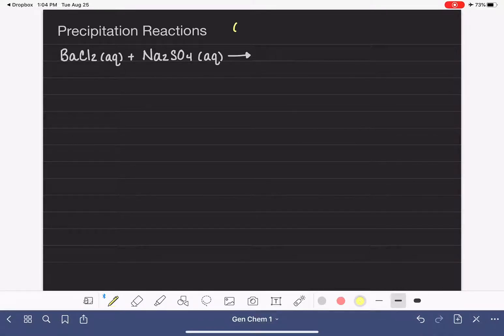A precipitation reaction is one in which we combine two aqueous reactants. Remember, aqueous just means that it's some sort of compound that's been dissolved in water. Those two aqueous reactants mix together and produce a product that is solid, does not dissolve in water. This solid product we refer to as the precipitate.